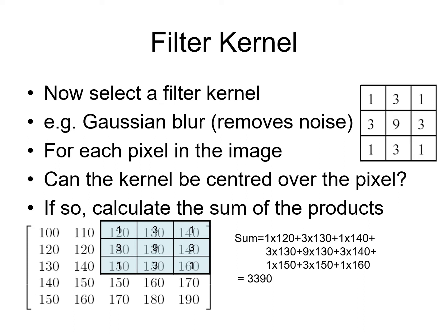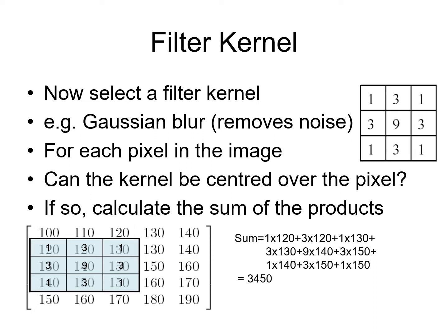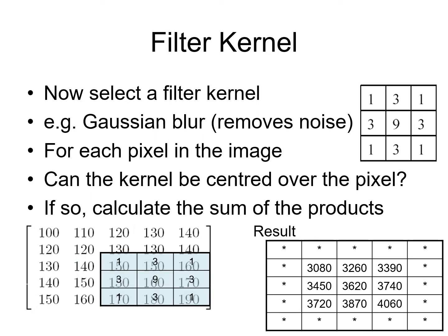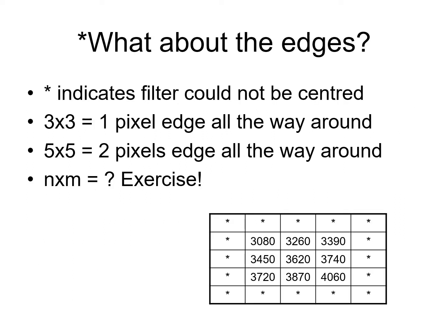We continue to evaluate the multiplication of the filter with the pixels. We now have the full intermediate array for this example. The stars indicate we could not center the filter at those positions. For a 3 by 3 filter there will be a 1 pixel wide border all the way around the image. For a 5 by 5 there will be a 2 pixel wide border. A good implementation will cope with any size filter.